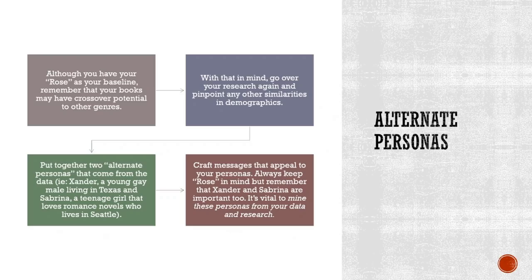Now, alternate personas. Rose is your baseline, but your books may have crossover potential into other areas. Perhaps you write mysteries with a young adult slant, for example. With that in mind, go over your research again and come up with two other personas that come from the data — for example, Xander, a young gay man living in Texas, and Sabrina, a teenage girl that loves romance novels. Keep these alternate personas in mind, especially when dealing with any of your work that has crossover potential.